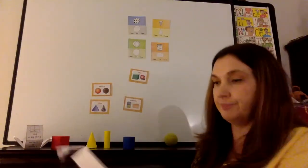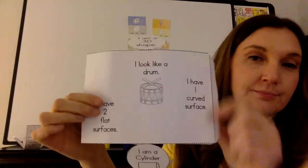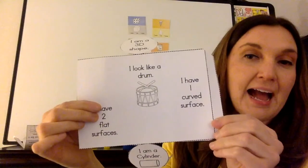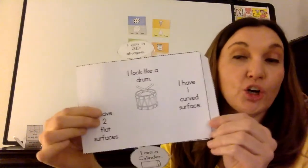And cylinders are kind of cool how they come together. So let's look at our manipulative of a cylinder. I'll find it in here. It says, I look like a drum.